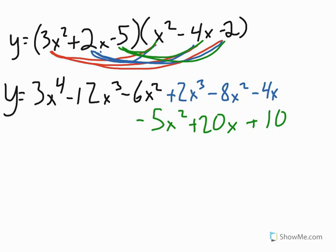So now I've done all of my distribution, and now it's time to look and see if there are any like terms that I need to combine. So I've got y equals. There's no other x to the 4th term other than the 3x to the 4th, so that one stays as is. Then I look at the negative 12x cubed and there's a 2x cubed over here. So the negative 12x cubed and the 2x cubed are going to combine to give me negative 10x cubed.